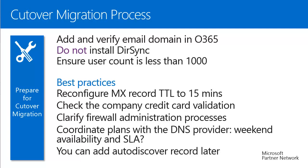The second practice: check the company credit card — verify it is valid and is actually a company credit card, as issues can cause delays. The third is firewall administration: clarify who will administer the firewall and what processes to maintain. The fourth is about the DNS provider: figure out who can make modifications to your DNS records, ensure that person is available even on the weekend, and check the service level agreement for your DNS provider.